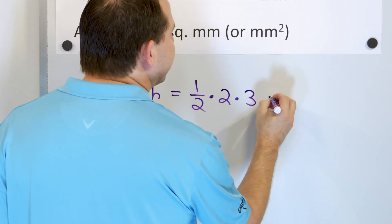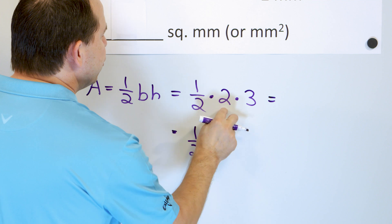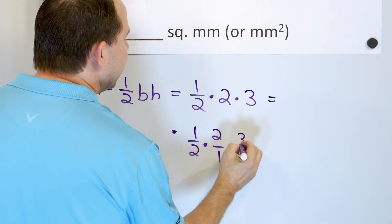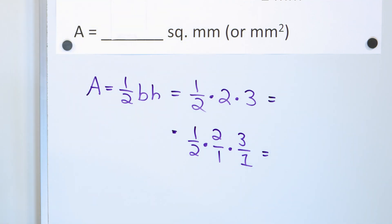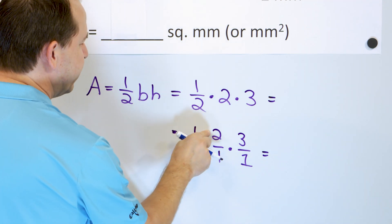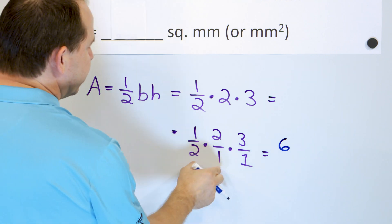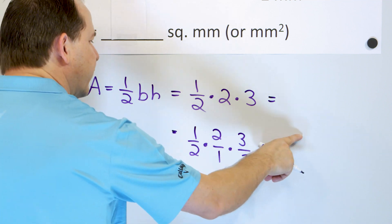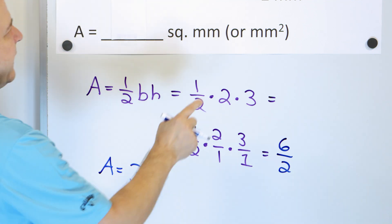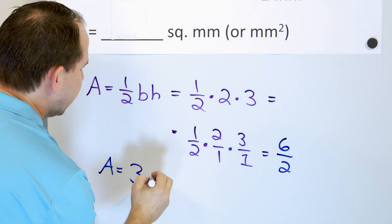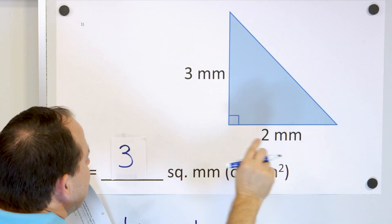You can treat them all as fractions: one-half times two-over-one times three-over-one. Multiply the numerators: one times two is two, two times three is six. Multiply the denominators: two times one times one is two. So you get six over two. Six divided by two is three. The units are millimeters times millimeters, so we call that square millimeters. The answer is three square millimeters.